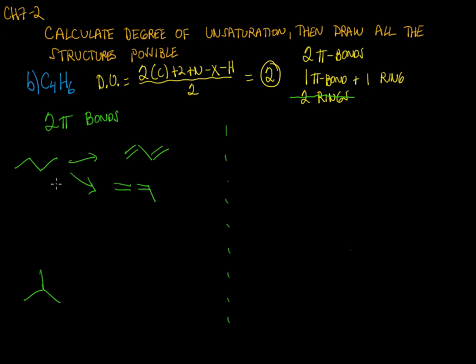You might think that's it, but remember triple bonds are a pi system that contains two pi bonds. There's one sigma and two pi bonds, so this counts as two degrees of unsaturation. The triple bond could be at the end of the chain or it could be in the middle of the chain.